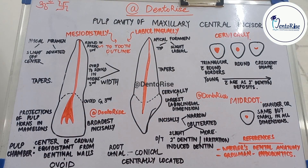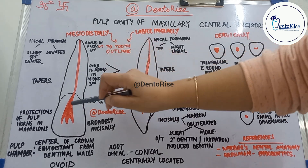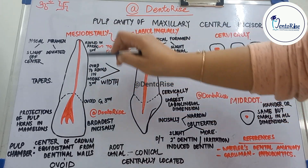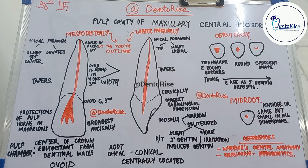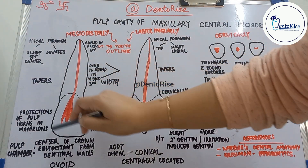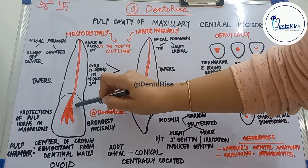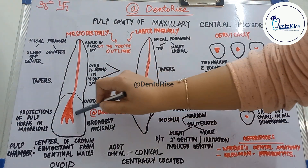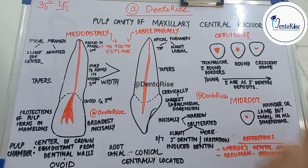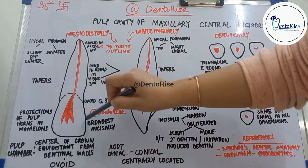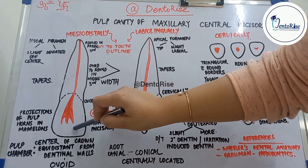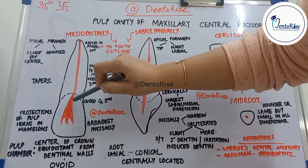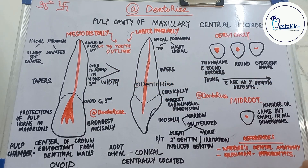Starting mesiodistally: the pulp cavity — the pulp chamber as well as the pulp canal — conforms to the general outline of the tooth, as you can see in the figure. The pulp chamber is present right in the center of the tooth, equidistant from the dentinal walls. It is very broad at the incisal level, and then both the pulp chamber and the pulp canal taper as we move down cervically.